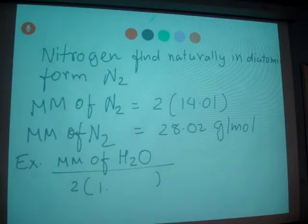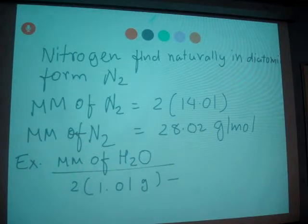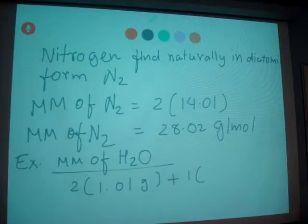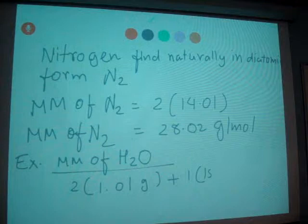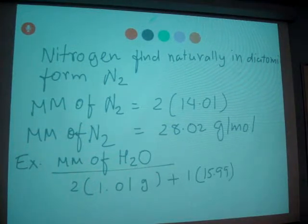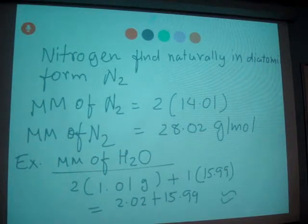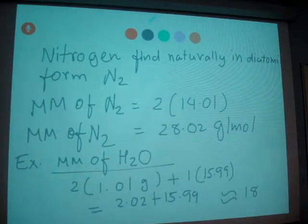So 2 times 1.01 plus oxygen is 1, and what's the atomic mass of oxygen? 16. So it's 15.99, you can say 16. And you get 2.02 plus 15.99, which is about 18 grams per mole. So that's the molar mass of H2O.